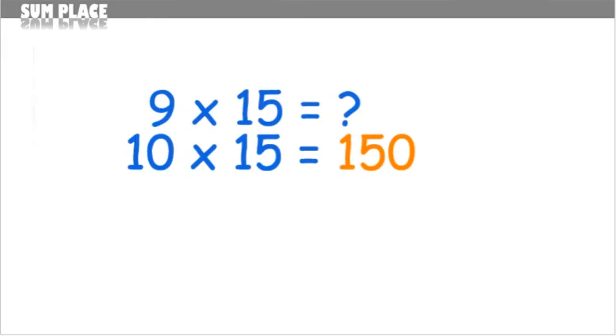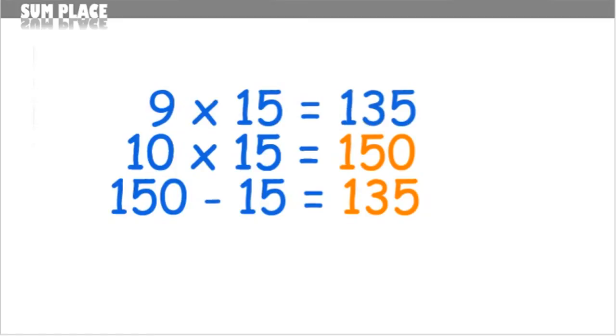So 10 times 15 equals 150. Next you need to subtract 15 from 150. So 150 minus 15 equals 135, and that's your answer. 9 times 15 is 135.